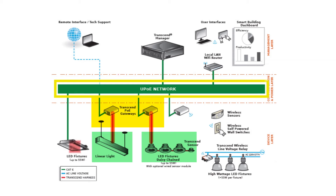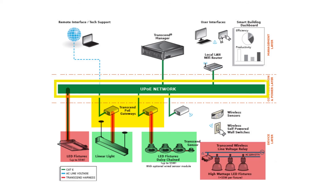Alternatively, Transcend-enabled fixtures can be connected directly to the PoE network. Transcend Relay Zone controllers are meant for high bay or other high wattage fixtures — for example, these can be used to control the lighting on a factory floor. They operate on line voltages and communicate wirelessly with the Transcend platform. Wireless energy harvesting sensors and wall switches allow for local lighting control and provide ambient light or occupancy sensing to the control software.